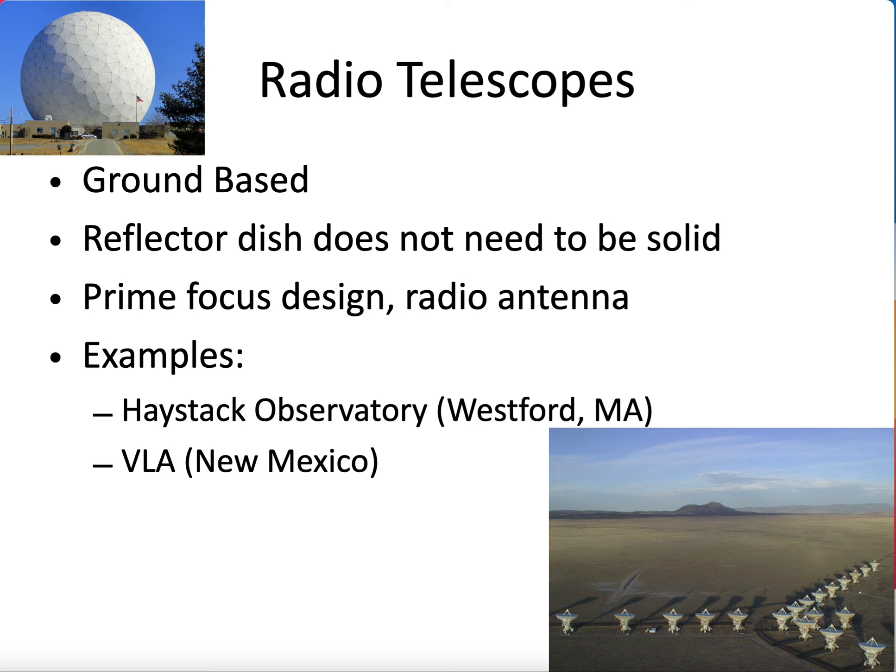There are a lot of similarities across these telescope types. With radio telescopes and all the way up until X-rays, they basically use reflecting dishes to concentrate and collect a lot of light — even if it's not light we can see. Radio waves are a type of light, just at very low frequency.